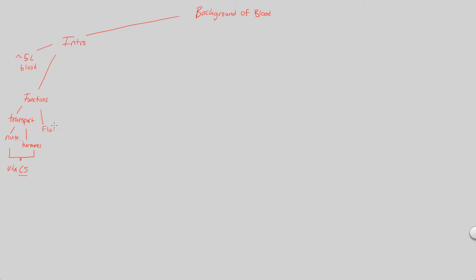In addition, blood is useful in maintaining proper fluid balance — we'll talk more about this as we move forward. And finally, blood is also important in pathogen defense. A pathogen is a foreign invader we do not want in the body, and we defend ourselves against those foreign invaders. Blood is useful in that process, and therefore blood will be useful in what we can term immunity. Those are the basic functions of blood we'll be highlighting in greater detail.